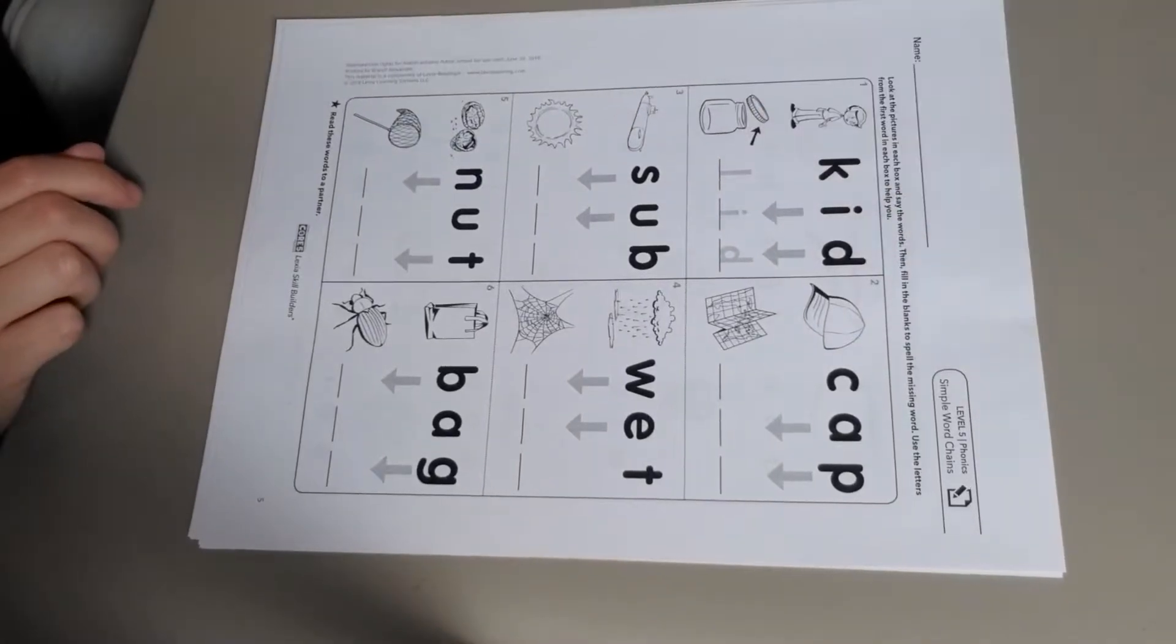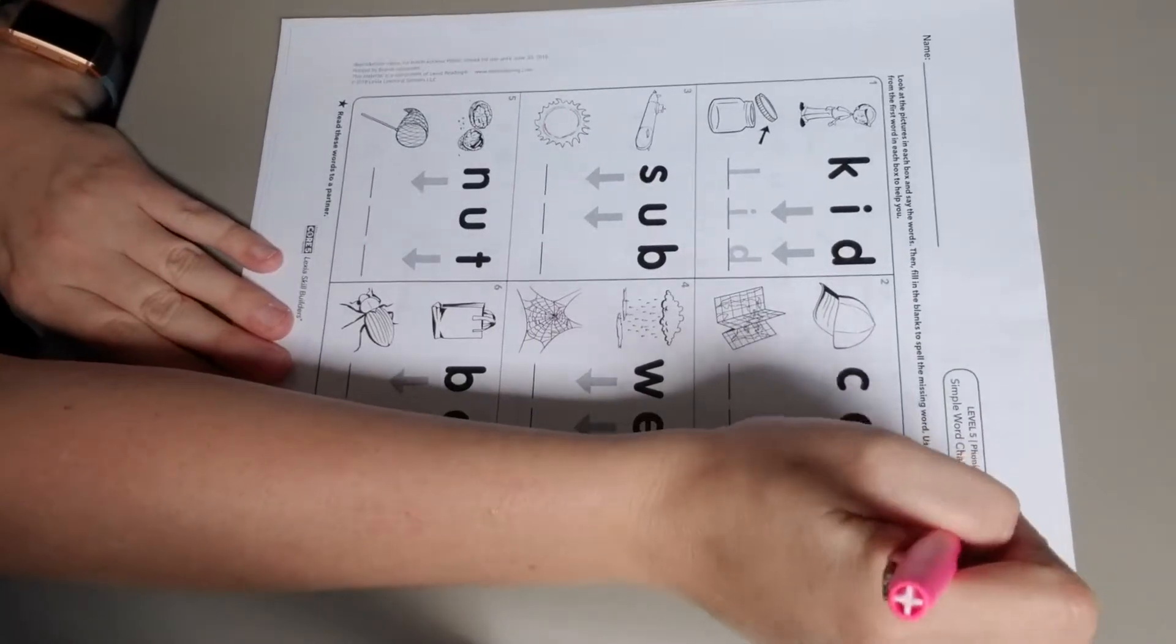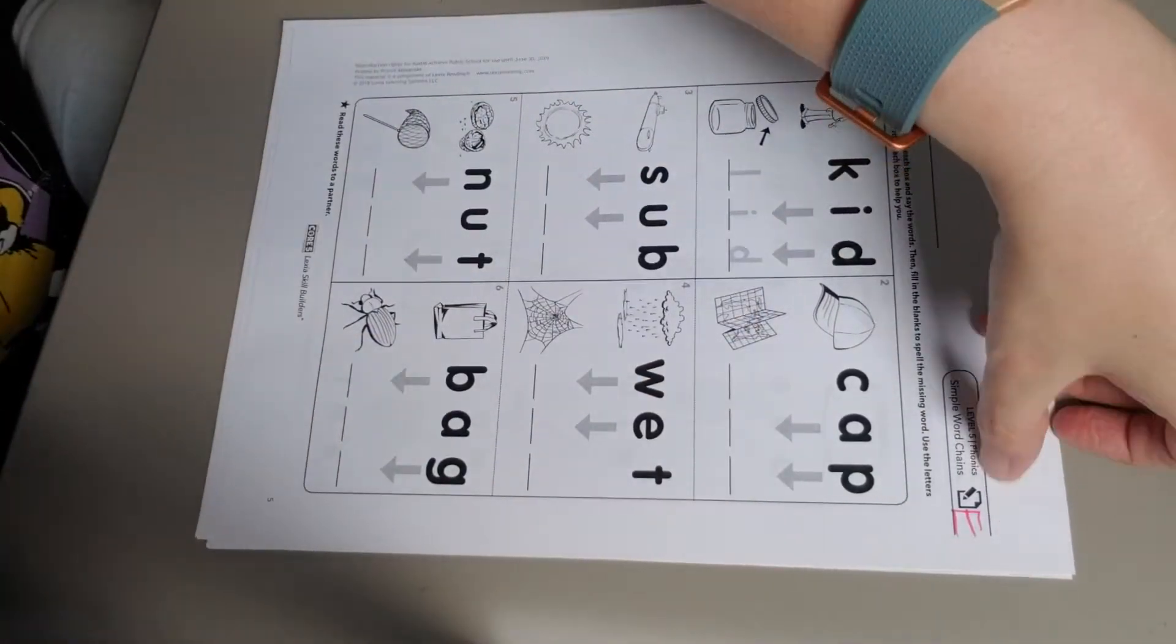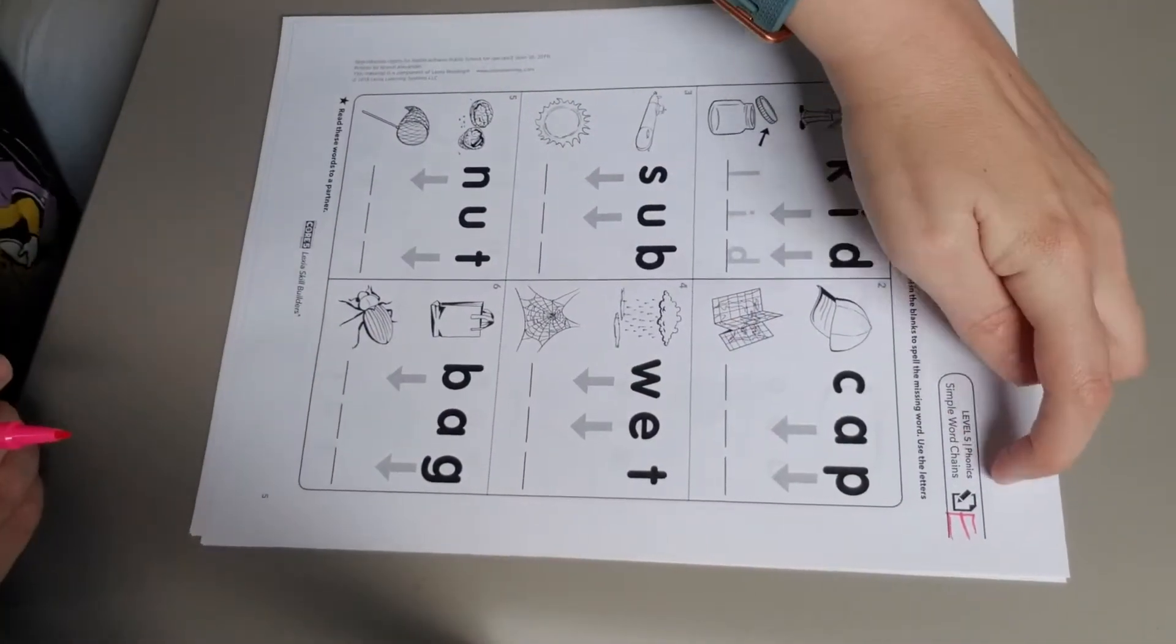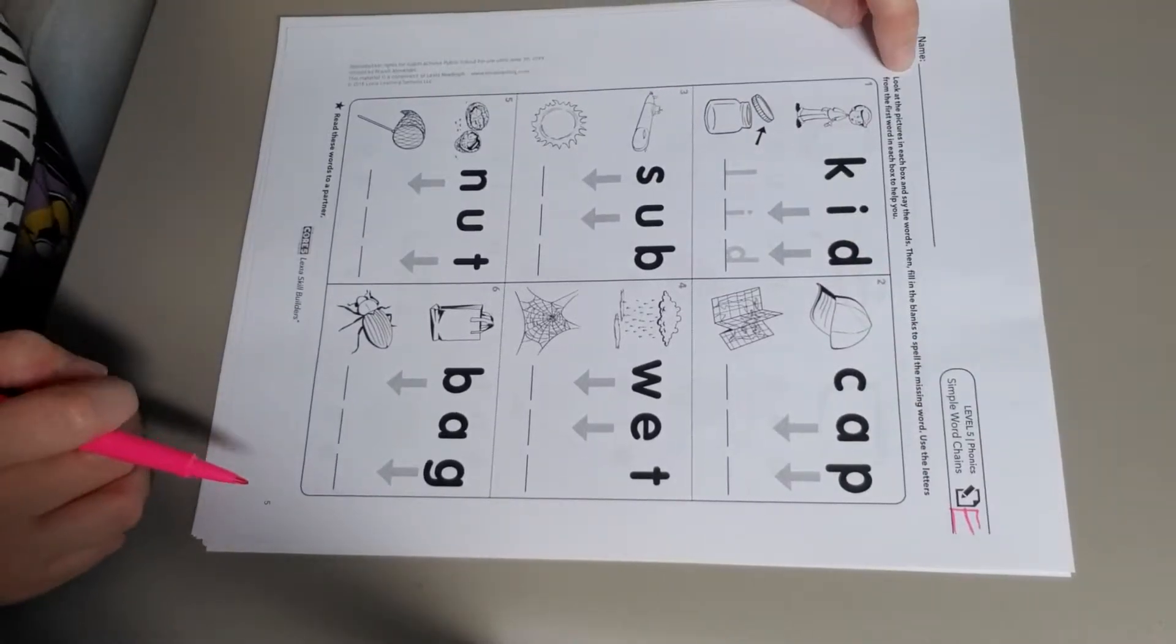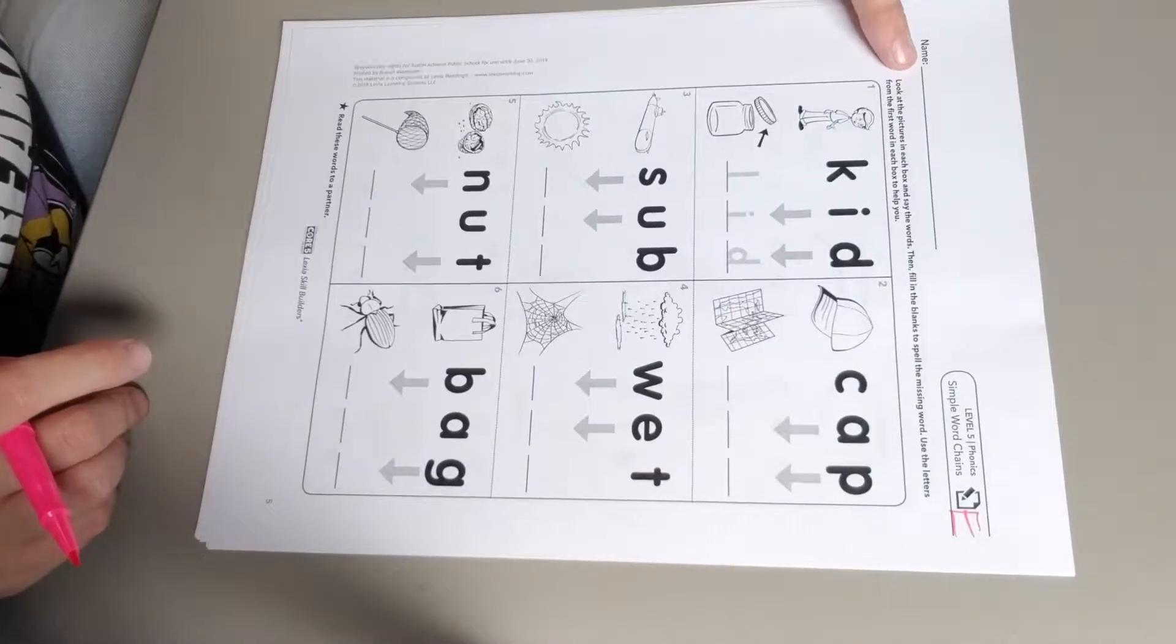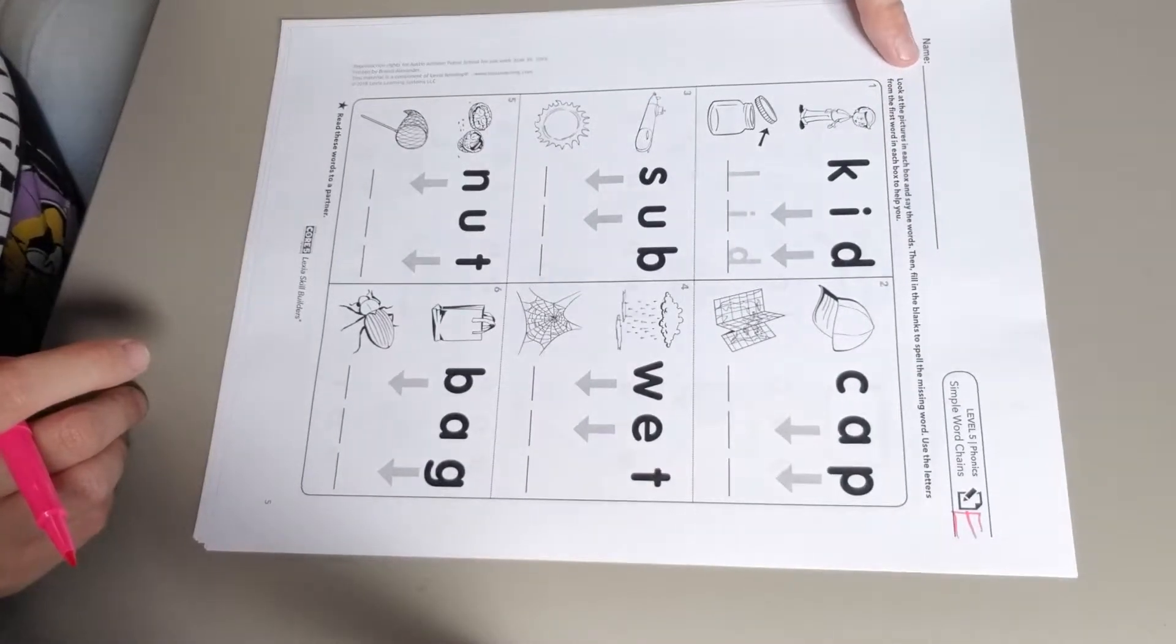Okay scholars, this is Level 5 Phonics Simple Word Chains, Sheet E. Make sure yours matches. The instructions say: look at the picture in each box and say the words, then fill in the blanks to spell the missing word. Use the letters from the first word in each box to help you.